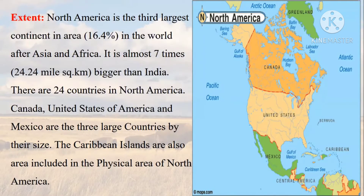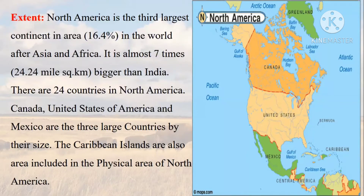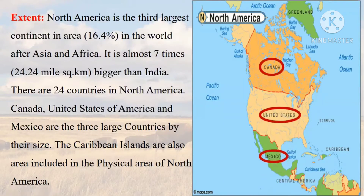Now let's learn about extent. North America is the third largest continent in area in the world, after Asia and Africa. It is almost seven times bigger than India. There are 24 countries in North America. Canada, United States of America, and Mexico are the three largest countries by their size.